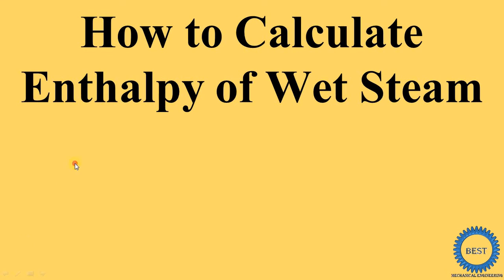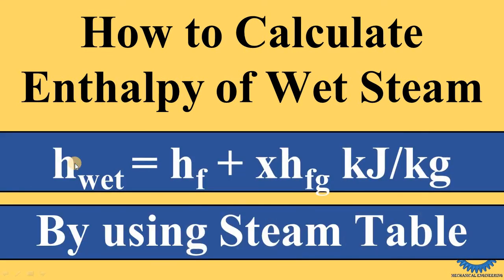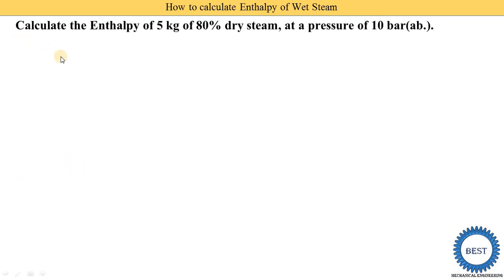In this video I explain how to calculate enthalpy of wet steam. To find out the enthalpy of wet steam, we compulsory need to use the steam tables. In the last video I explained how to calculate enthalpy of water, which can be calculated directly from equations or by using the steam tables. But when we need to find out enthalpy of wet steam, we must use the steam tables.